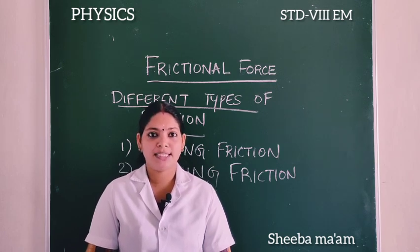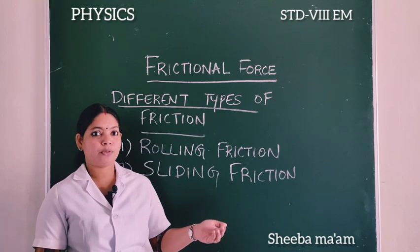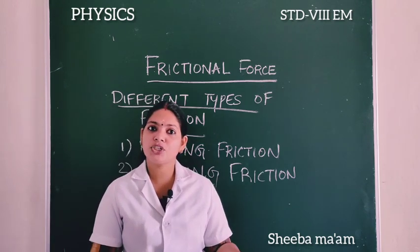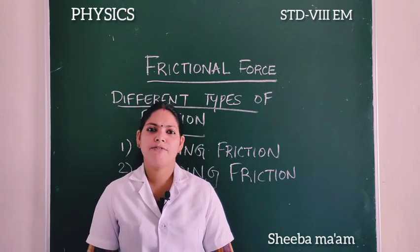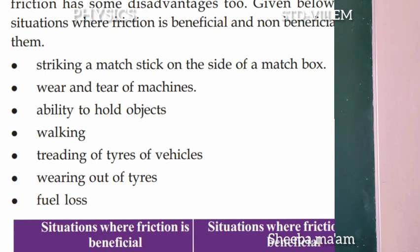Let us discuss the advantages and disadvantages of friction. Some situations are given. You have to classify the situations in which friction is beneficial and non-beneficial. Striking a matchstick on the side of a matchbox is beneficial. Wear and tear of machines is non-beneficial. The ability to hold objects is beneficial. Walking is beneficial. Treading of tyres of vehicles is beneficial. Wearing out of tyres is non-beneficial. Fuel loss is non-beneficial.